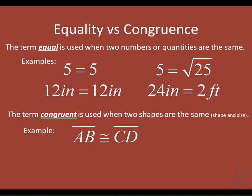What that means is I have two different line segments, but if I took one of them and laid it on top of the other, it would match up perfectly — it would look identical to it. And that's the idea of congruence. That symbol is the congruent symbol.